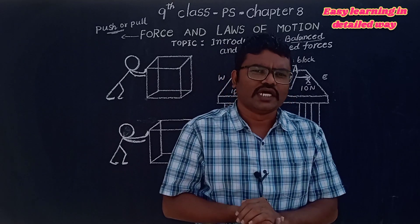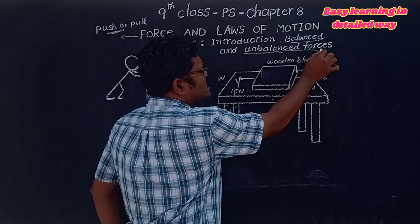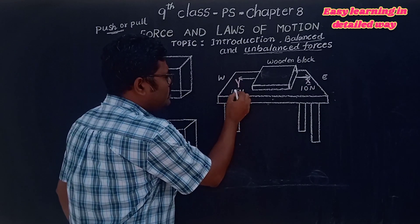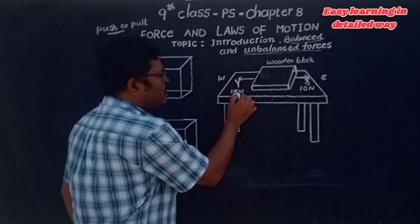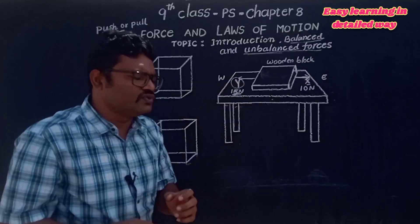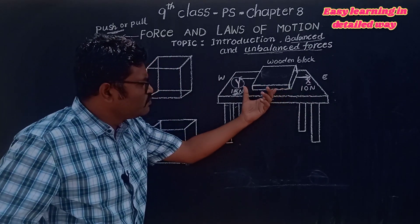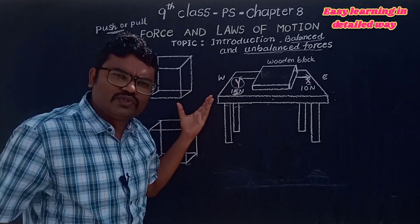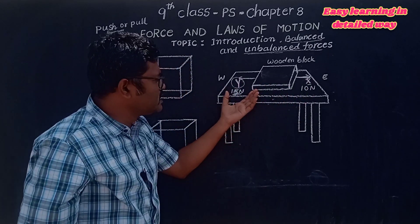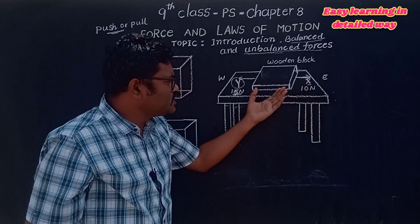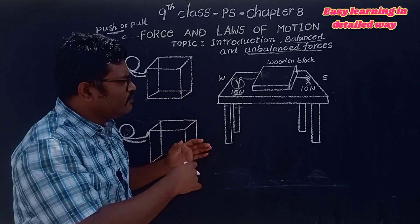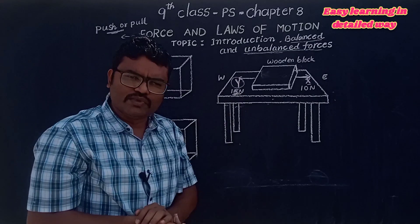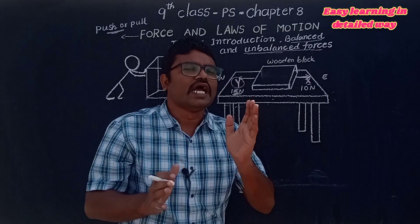Whereas in unbalanced forces, if we apply 15 newtons of Y force and 10 newtons of X force, the wooden block moves in the west direction. Both forces are not equal, so the block moves toward the greater force. This is an unbalanced force.